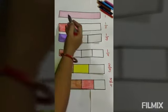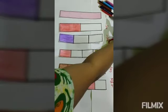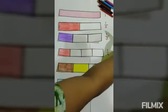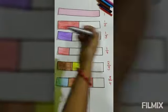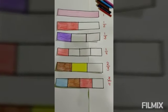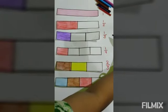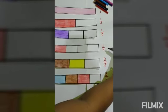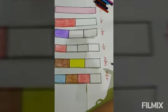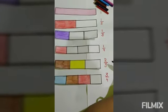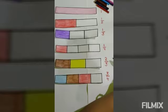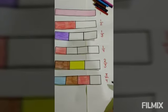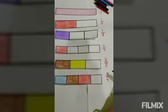So when we have a whole thing we call it one whole. When half of the portion is colored we write one half. When one part out of three equal parts is colored we write one third. When one part out of four equal parts is colored we write one fourth. When two equal parts out of three are colored we write two thirds. And when three equal parts out of four are colored, the fraction is three fourths.